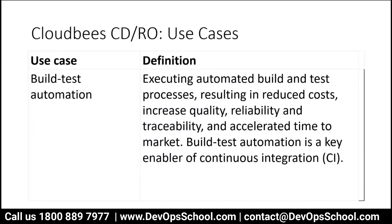Some key use cases include build and test automation — executing automated build and test processes resulting in reduced cost, increased quality, reliability, traceability, and accelerated time to market. Second is deployment automation: deploying applications across different environments, different patching stages, major and minor stages, with increased quality, reliability, and traceability.